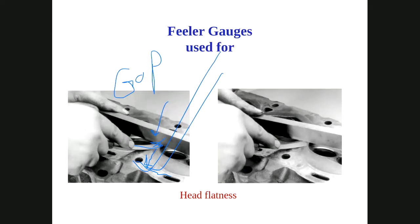If the engine head is not perfectly flat, liquid can leak and the engine will be destroyed. Filler gauges are a quick and affordable method to check flatness. They are available at your local mechanic — if they are working on an engine, you may see them using filler gauges for flatness checks.